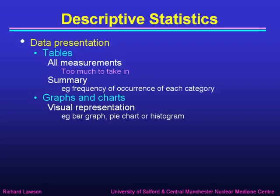An important part of descriptive statistics is presenting the data, and we may do it in the form of tables, where a lot of measurements can be given. But if we give all the details then there will be too much to take in easily, so it's more usual to give a summary of the data, for example by giving the frequency of occurrence of each category of measurement.